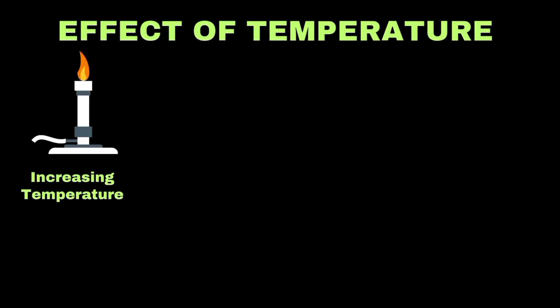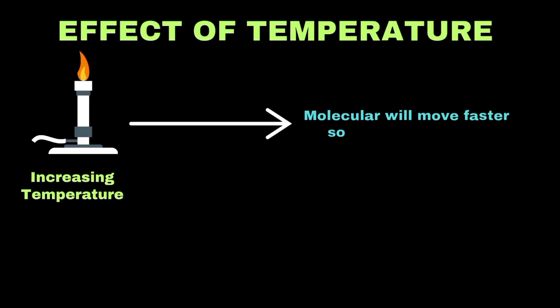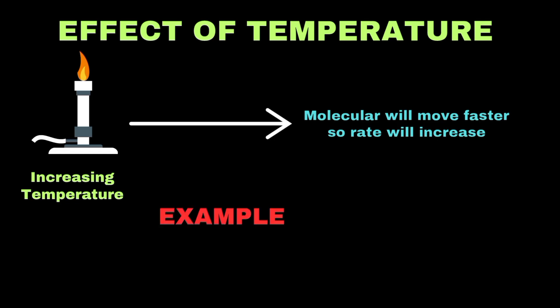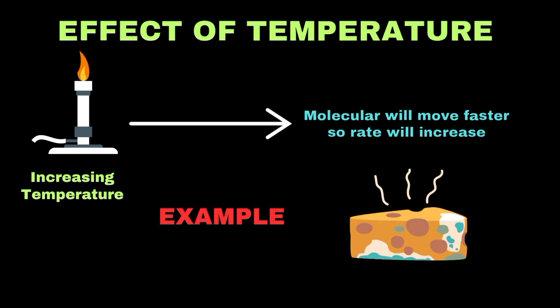Increasing the temperature makes molecules move faster, which results in more energetic collisions and a higher reaction rate. A common example is that food spoils faster in summer than in winter, because higher temperature speeds up microbial activity.